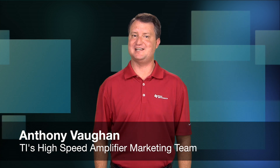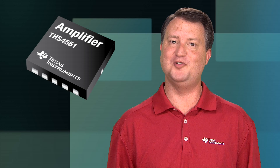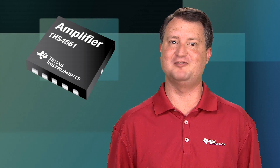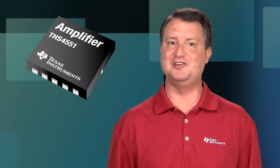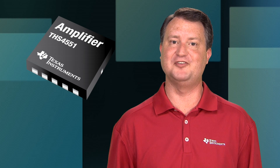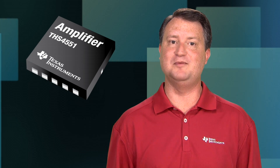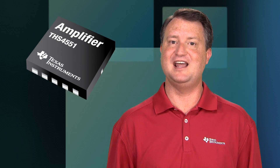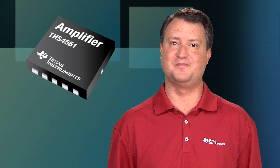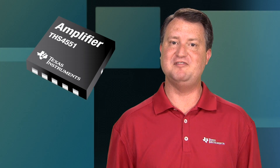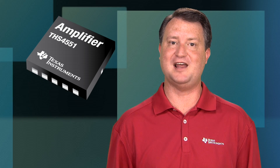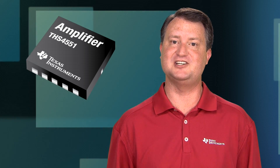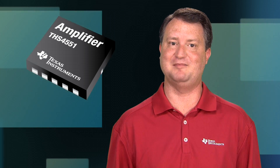Hello, I'm Anthony Vaughn with Texas Instruments High Speed Amplifier Marketing Team. Today I will introduce TI's THS4551 Low Noise Rail-to-Rail Output Fully Differential Amplifier that's ideal for use in driving differential active filter designs and for driving the input of high-resolution Delta Sigma and SAR analog-to-digital converters. The THS4551 is also a great pin-compatible upgrade from the very popular THS4521 amplifier family.